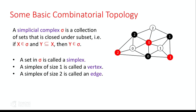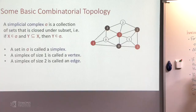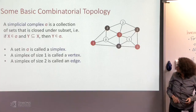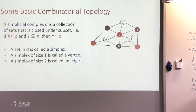A simplicial complex sigma is a collection of sets closed under subsets — if x is in sigma and y is a subset of x, then y is in sigma. A set in sigma is called a simplex. A simplex of size 1 is a vertex, and a simplex of size 2 is an edge. For example, a triangle is a simplex of size 3, and its three edges are three distinct simplices of size 2.